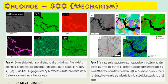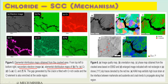This is a very good image to visualize CLSCC. You can see branched cracks here. In Figure 5 there is an element distribution map from the cracked area. The black portion shows presence of iron, red shows chromium, another map shows oxygen, one shows chloride, and another shows nickel in the cracked portion. From top left to bottom right: secondary electron image, and element distribution maps of iron, chromium, oxygen, and chlorine. The gap generated by the crack is filled with chromium-rich oxide and chlorine is also enriched at that location.